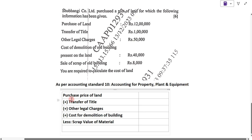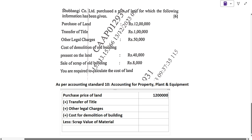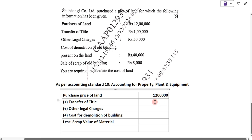To solve this example, first you have to write down the purchase price of land, which is Rs. 12 lakh. After that, add the transfer of title, which is Rs. 1 lakh. Then add other legal charges, which is Rs. 50,000.